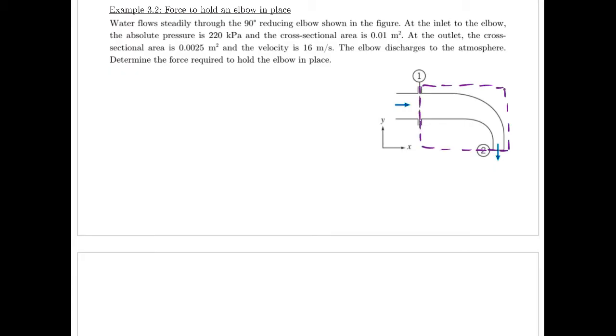So that control volume encompasses our elbow there, so we'll be able to figure out the forces. And we have now two control surfaces, at 0.1 and 0.2 there. So we'll write down what we're given about those two points. And direction is very important, as you can imagine. So we've got our coordinate axes labeled here, x and y.